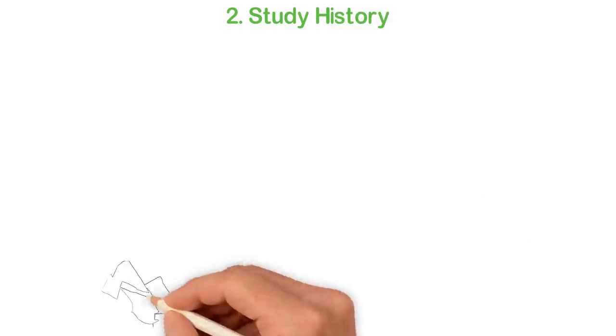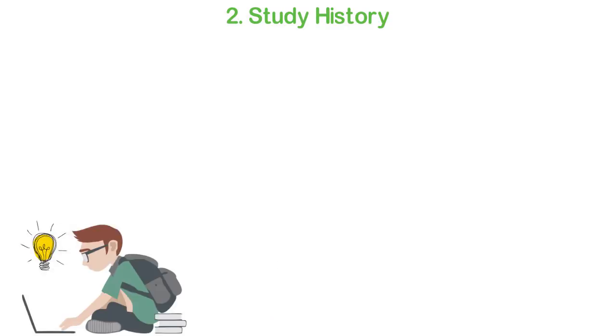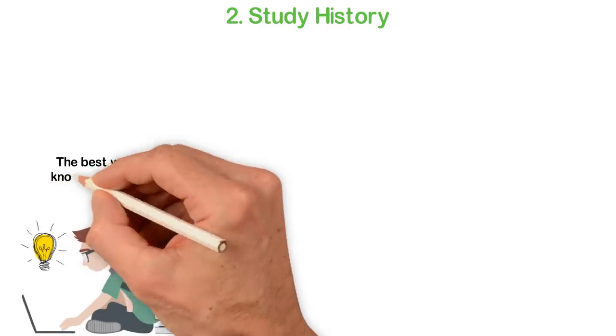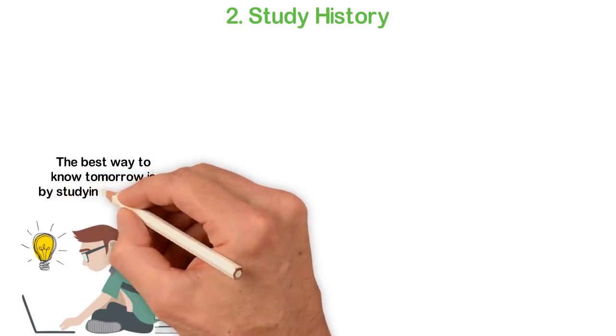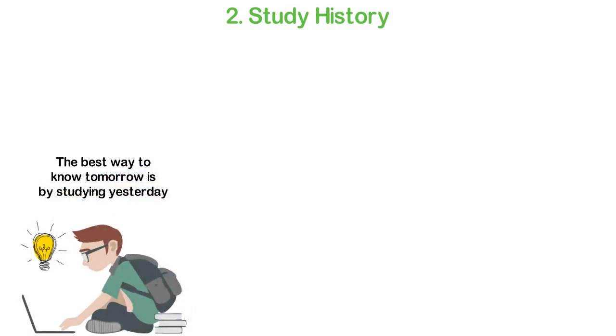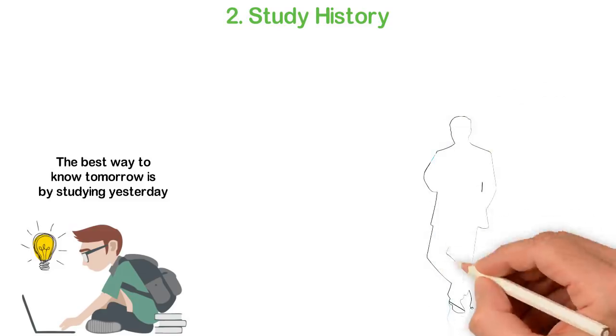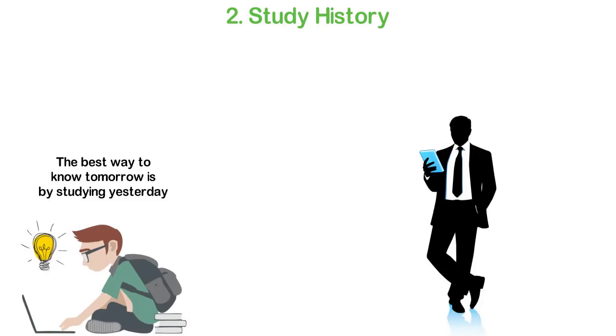Two: study history. No, you don't have to go to Harvard for a degree on history. You just have to read books and online resources about the past as related to your industry and the world at large. Why is this important? Well, as an entrepreneur, we have to live in the future. And to live in the future, we have to know the past because the best way to know tomorrow is by studying yesterday. Read some history related to your industry and the world. Watch some documentaries. Know the past so that you can take advantage of the future.